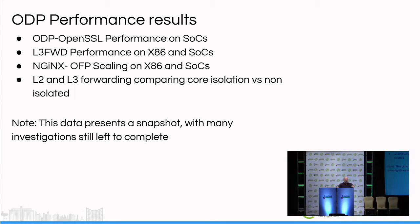What we'd like to talk about this morning: OpenSSL work, some work done with the L3 forward benchmark program on both x86 and SoCs, NGINX which is an open source web server, and various L3 and L2 forwarding comparisons showing the effects of core isolation. One disclaimer: while we're presenting a snapshot of some of the work we've done, this is still very much ongoing work and we just wanted to share some current views.